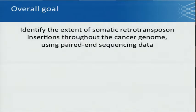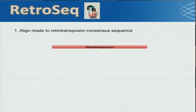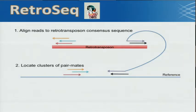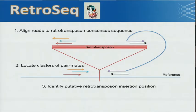The overall goal of my project is to identify the extent of somatic retrotransposon insertions throughout the cancer genome using paired-end sequencing data. TCGA is a great resource when looking at questions of extent. To that end, I developed RetroSeq. The way RetroSeq works is as follows: we align paired-end reads to retrotransposon consensus sequence, then locate the pair mates of these reads that align uniquely to the reference human genome. We find these reads, cluster them, and this provides evidence for a potential retrotransposon insertion at that site.